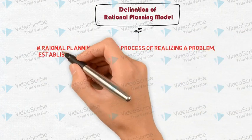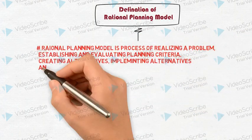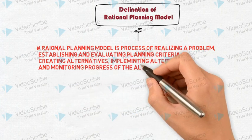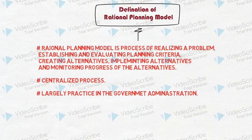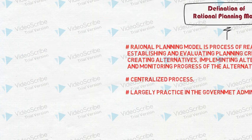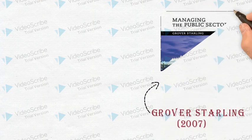We also find that it is a very centralized process and a larger practice in government administration. Grover Sterling, in 2007, in his book 'Managing the Public Sector,' defines five steps of the rational planning model.